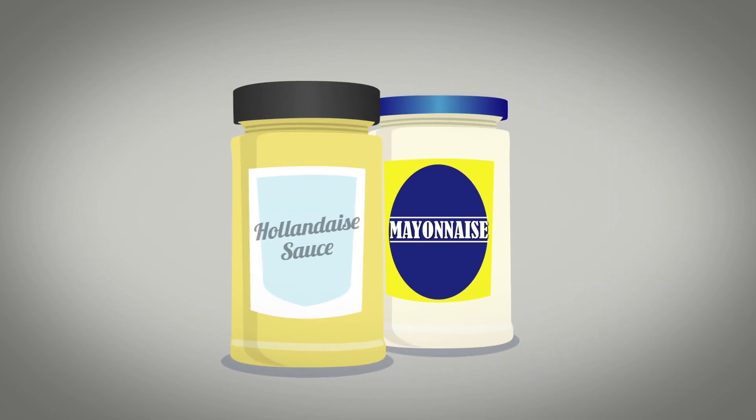This is what is done in sauce recipes such as hollandaise sauce and mayonnaise. The emulsifier that's used in these recipes is called lecithin which is found in egg yolk.